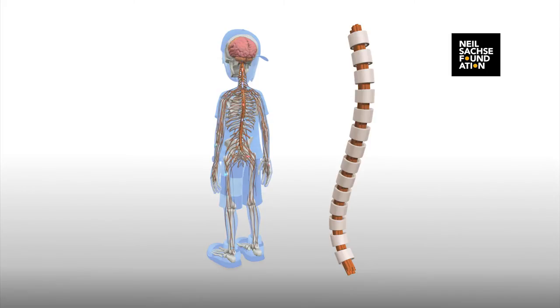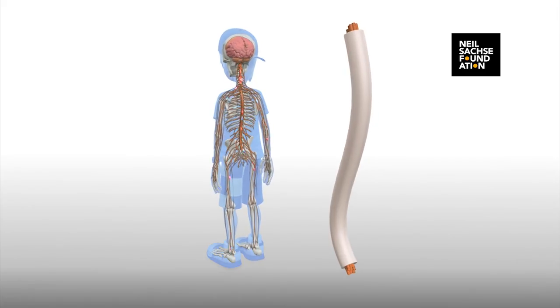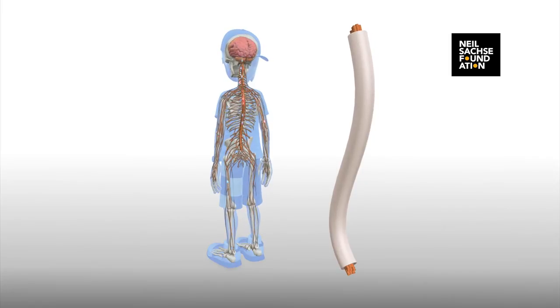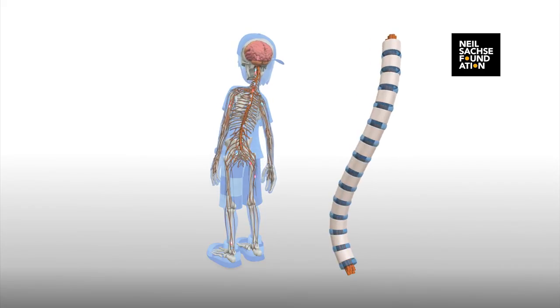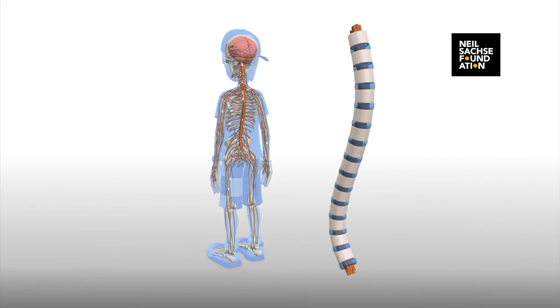If your spine was a solid tube, it would be very strong, but you would not be able to twist, turn, or bend over. So it is made from a chain of short, bony tubes with soft discs between to make it flexible. These soft discs mean that it can easily be injured.